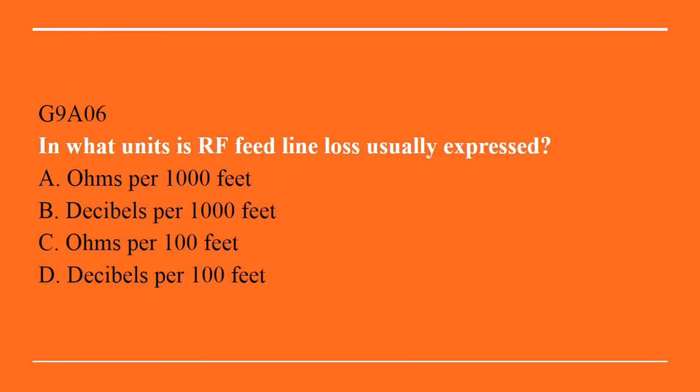G9A06: In what units is RF feed line loss usually expressed? A. Ohms per 1,000 feet. B. Decibels per 1,000 feet. C. Ohms per 100 feet. Or D. Decibels per 100 feet. The correct answer is D, decibels per 100 feet.